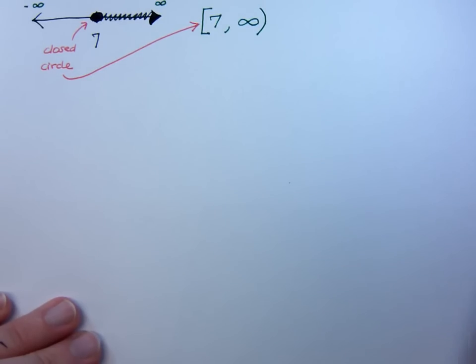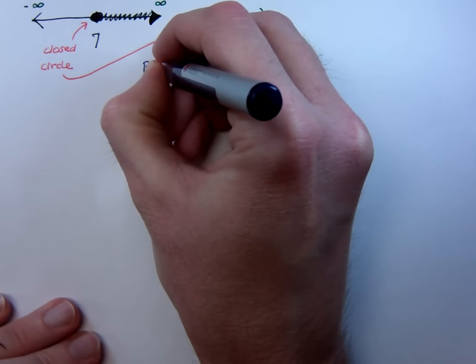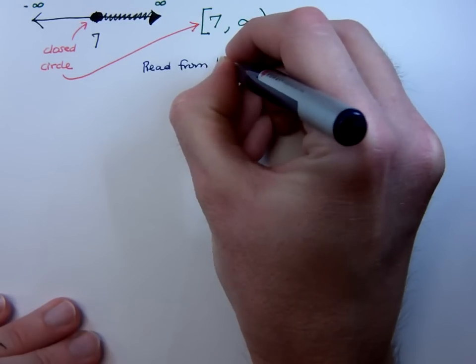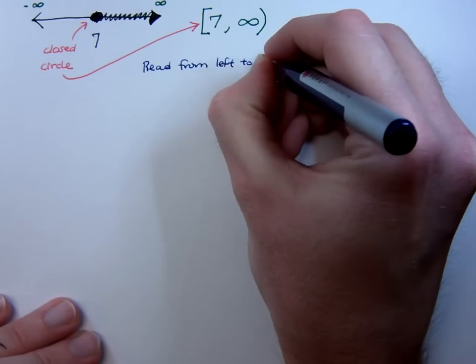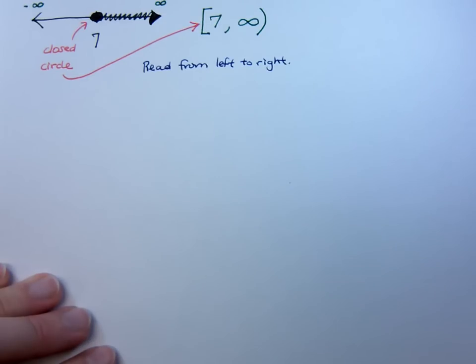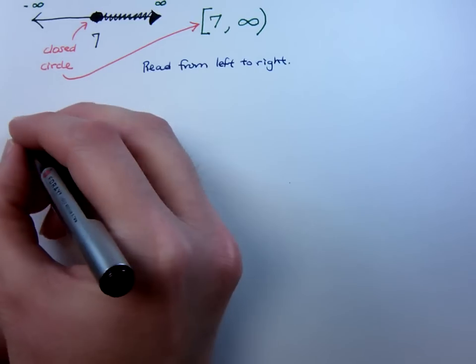Remember, whenever you do interval notation, you always read from left to right. Always read from left to right. So keeping that in mind, let's look at this next example.